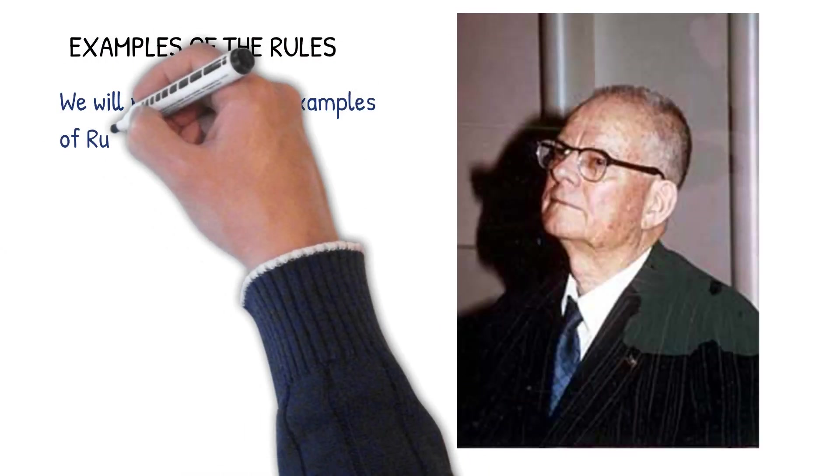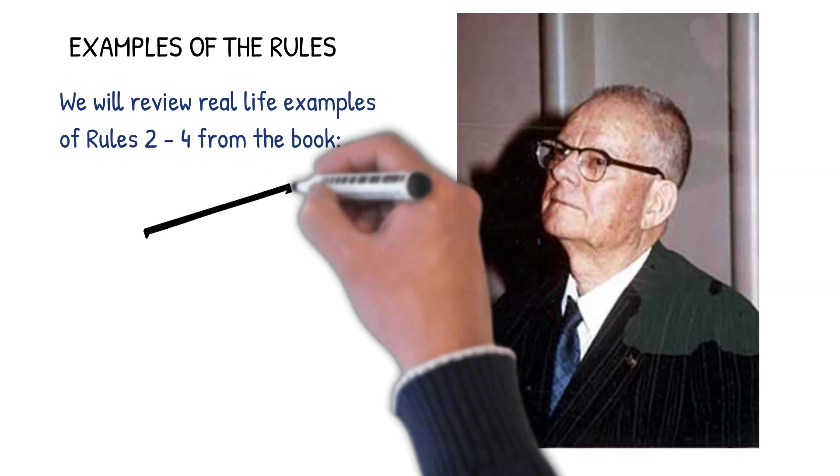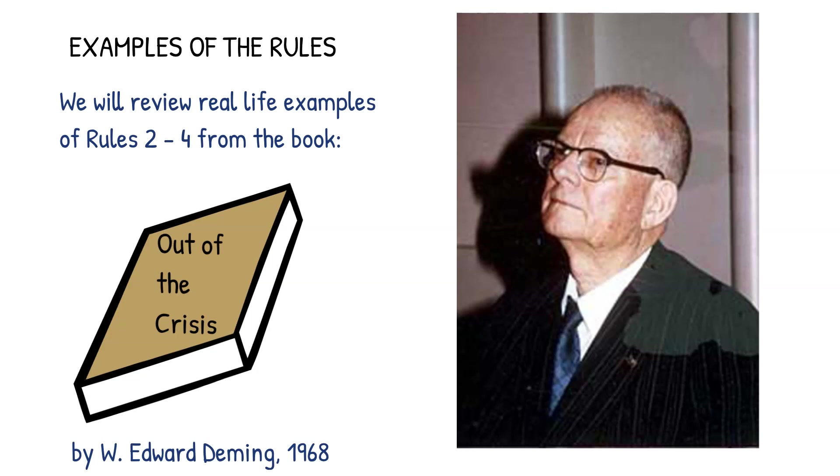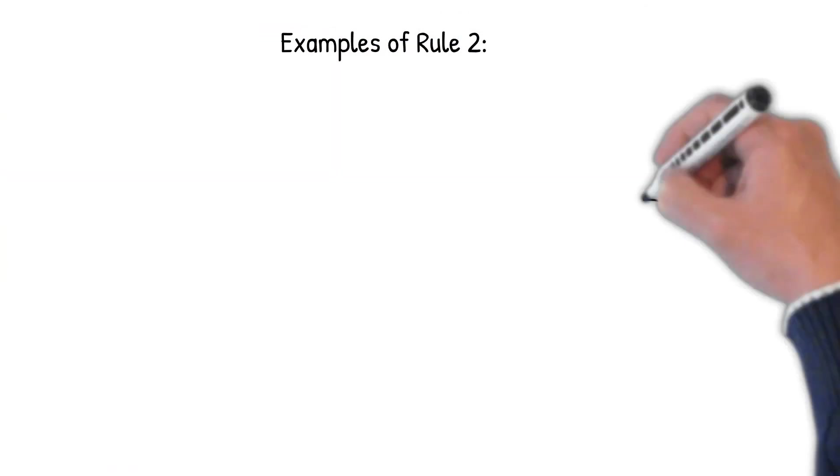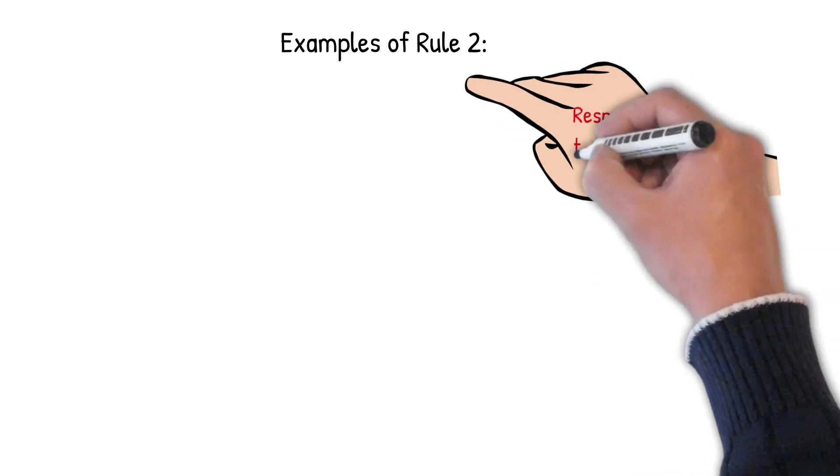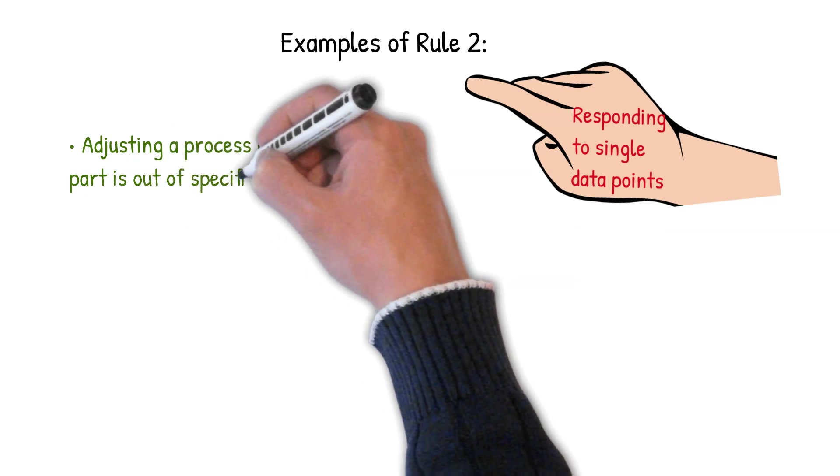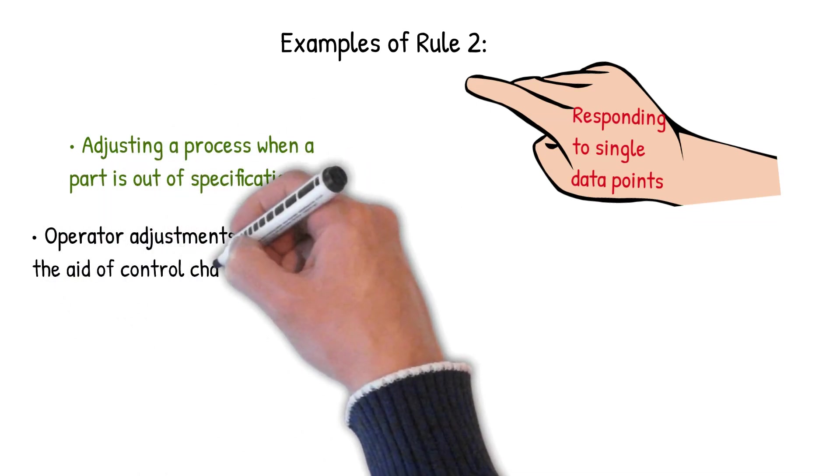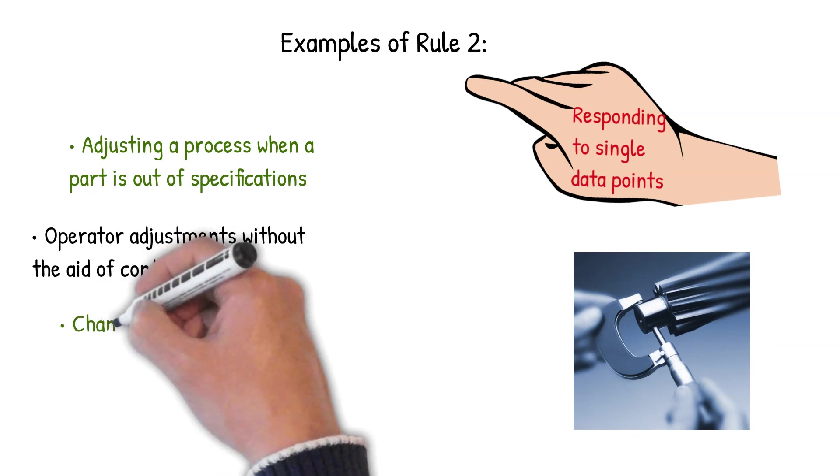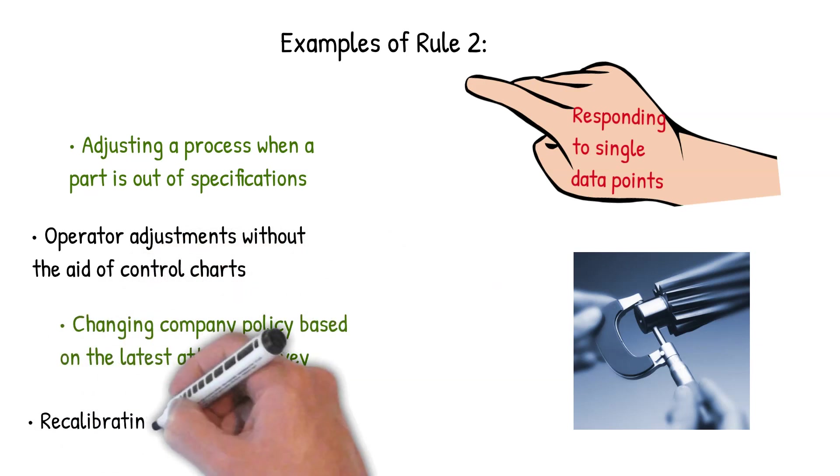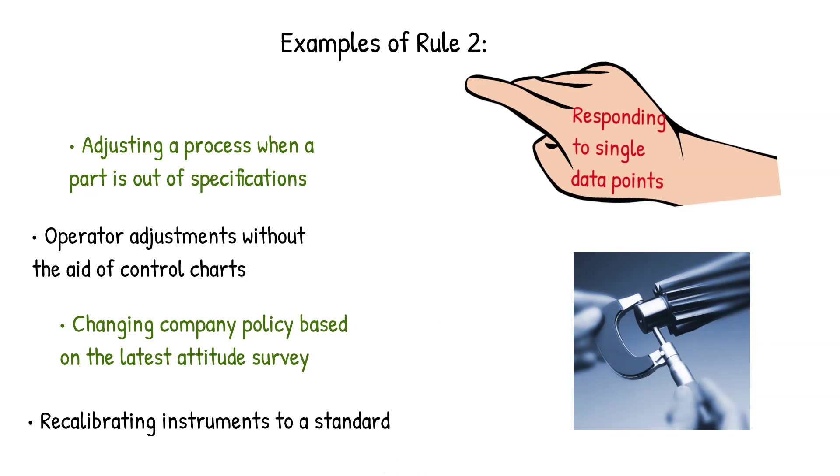So examples of the rules. We're going to review some real life examples of rules two and four from the book Out of the Crisis by Dr. W. Edward Deming published in 1986. So let's start with rule two. Examples of rule two, the ones that we use most of the time when over controlling a process. One example of that is adjusting a process when a part's out of specification. Another is operator adjustments without the aid of control charts. And then we have changing company policy based on the latest attitude survey or recalibrating instruments to a standard when it's not necessary to recalibrate it yet.